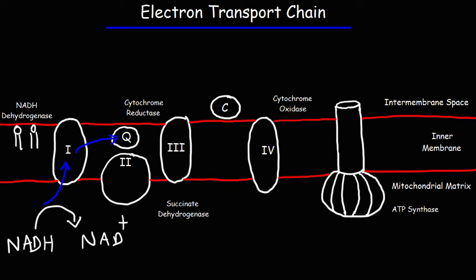Ubiquinone passes the electrons to complex three, which is called cytochrome reductase, also known as the BC1 complex in some textbooks. Complex three gives the electrons to cytochrome c. Whenever cytochrome c receives electrons, it becomes reduced. Reduction, as we discussed, is the gain of electrons — so this name is fitting for complex three because it reduces cytochrome c by giving it electrons.